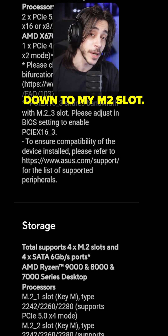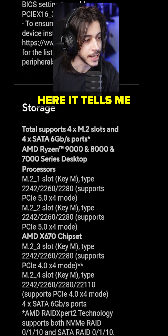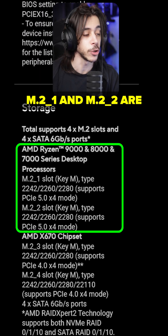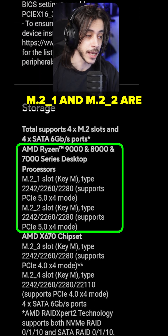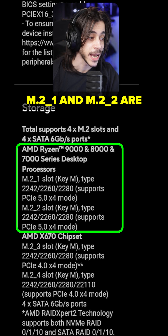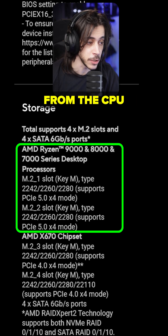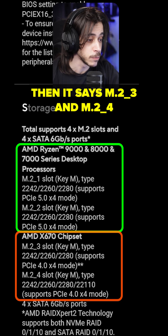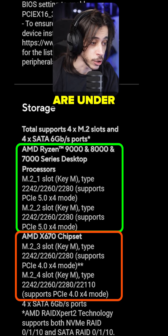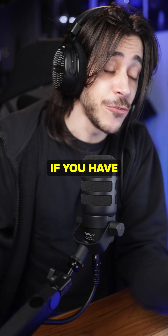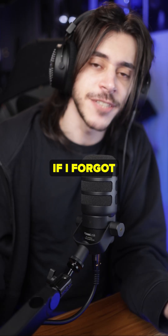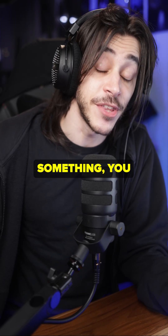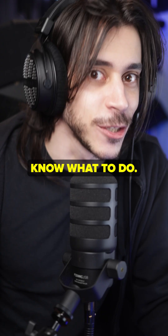Scrolling down to M.2 slots, it tells me M.2_1 and M.2_2 are from the CPU, and M.2_3 and M.2_4 are under the chipset. If you have questions or if I forgot something, you know what to do.